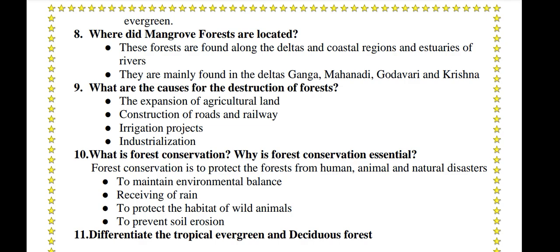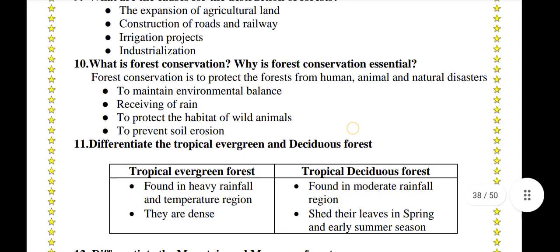What is forest conservation and why is it essential? Forest conservation is to protect forests from humans, animals, and natural disasters. It is essential to maintain environmental balance, ensure receiving of rain, protect the habitat of wild animals, and prevent soil erosion.